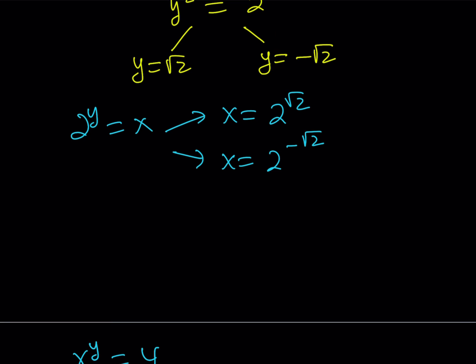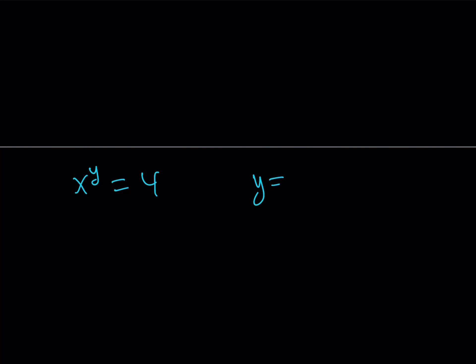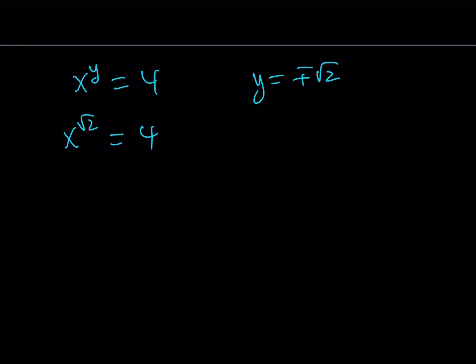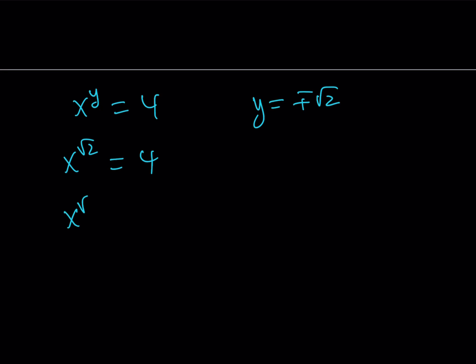But what happens if you consider the other equation, which is x to the power y equals 4, and we do know that y is equal to plus minus root 2. Now, in this case, if you go ahead and replace y with root 2, for example, you're going to get x to the power root 2 equals 4. Now, how do you solve for x in these kinds of equations, right? Well, I can raise both sides to the power 1 over root 2. And this is what you're going to be getting from here.